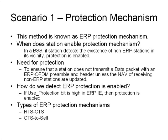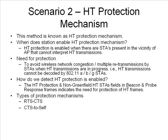The next protection mechanism is the HT protection mechanism. HT protection mechanisms are enabled when there are legacy devices present in the vicinity of 11n devices. HT protection is determined by viewing the HT beacon. HT stations use the operating mode and non-green field stations present field in the HT information element to determine whether or not to use protection.